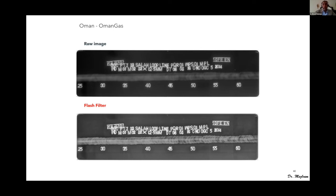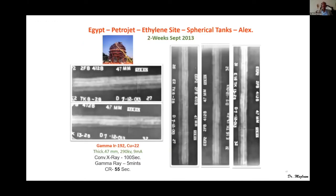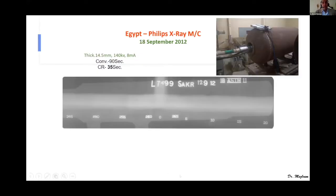In Egypt, the spherical tank project in Alexandria in 2013 was very successful, significantly reducing exposure time. Using gamma ray at 192 Curie, 22 mm thickness at 47 mm, with conventional X-ray each film took 100 seconds, and by gamma ray we got it in five minutes. But CR gave very nice screens in 55 seconds only — meaning we can save 50 times the exposure time per shot across all welds in the spherical tanks.